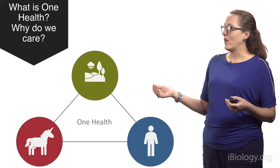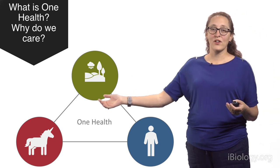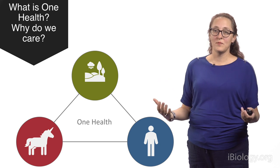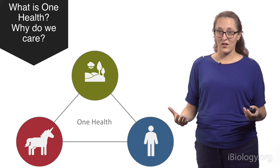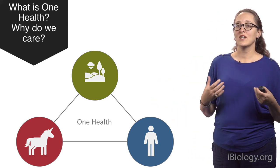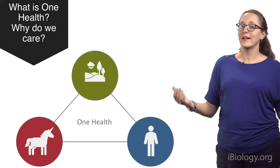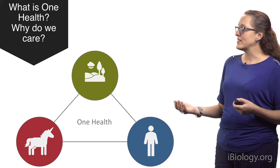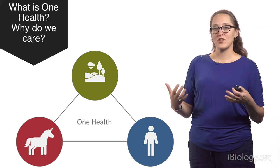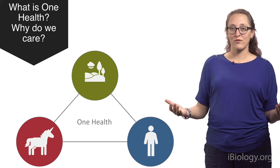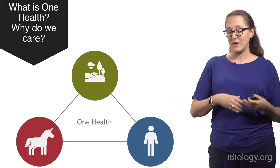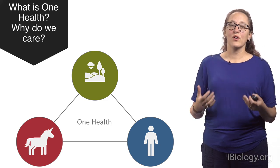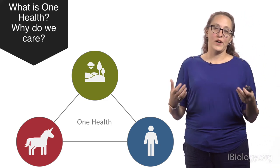One Health is the idea that you have environmental, animal, and people health, and that you cannot optimize one without optimizing the other. It's just a concept of let's all take care of the planet so that we all have a planet to live on. Vector-borne diseases, which is a broader term for more than arboviruses but any pathogen transmitted by a vector, is a perfect example of One Health.